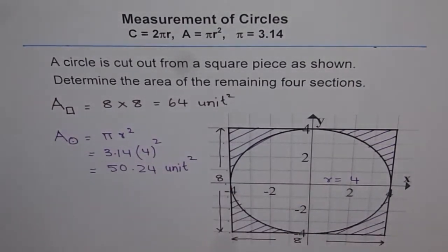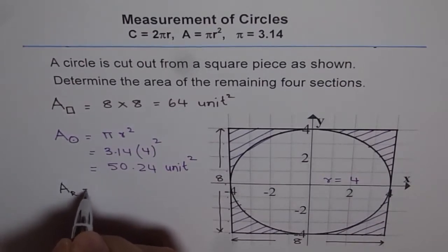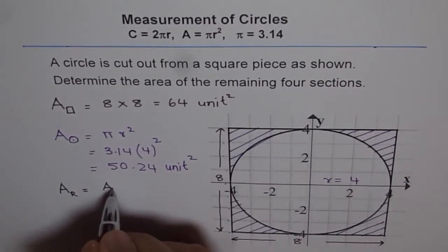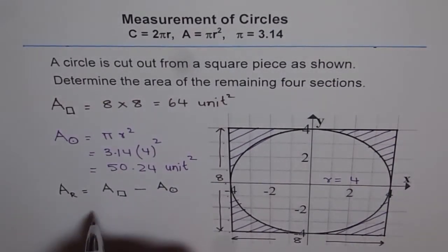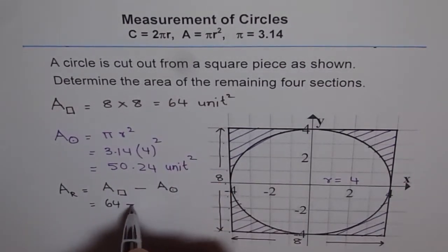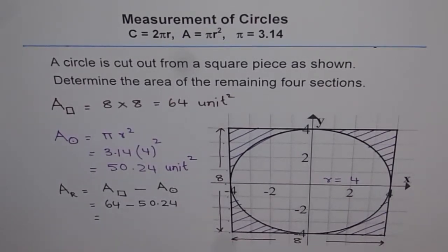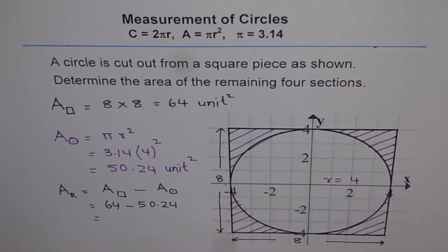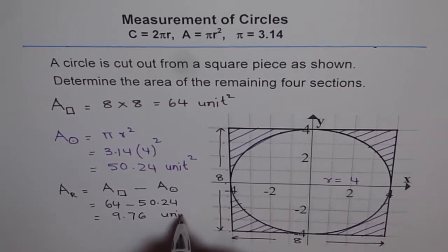Now, what is the area of remaining portion? Remaining portion means this portion. So we say area of remaining portion is area of square take away area of circle. So which is area of square is 64, 64 take away 50.24. So we get 9.76. 9.76 unit square.